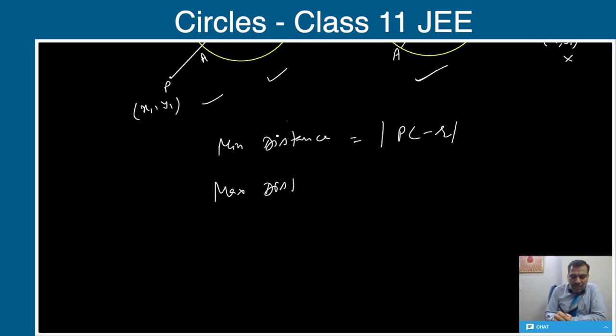The maximum distance will be what? That will be PC plus R. That will give us the maximum distance of a point from the circle. Is that clear to everyone?